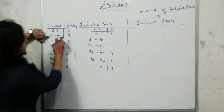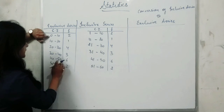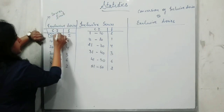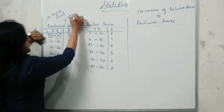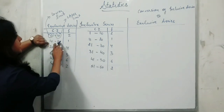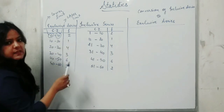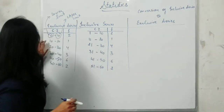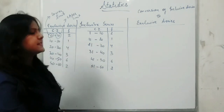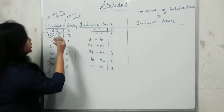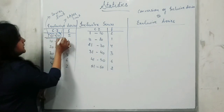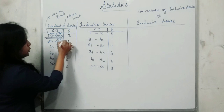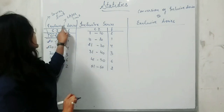In the exclusive series, we have a range of 0–10, 10–20, 20–30, 30–40, 40–50, and 50–60. In this series, the upper limit of one class is the same as the lower limit of the next class — this is called an exclusive series. For example, the value 10 — we exclude it from 0–10 and include it in 10–20; similarly, 20 is excluded from 10–20 and included in 20–30. This is why it is called exclusive series.